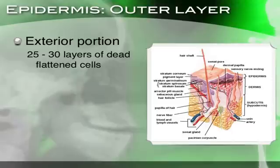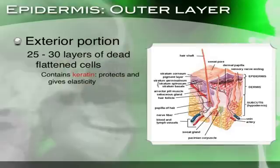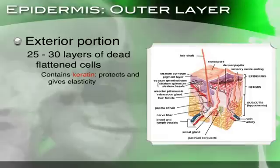A lot of the dust you see generally in a building or a house has to do with dead skin cells. This exterior portion contains keratin, which basically protects the skin and gives it elasticity — you can pull on your skin and it's kind of elastic because of the keratin in the epidermis. Lotion is used to keep the skin moisturized, especially in a cold place like Michigan where your skin can dry out.